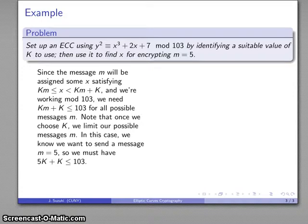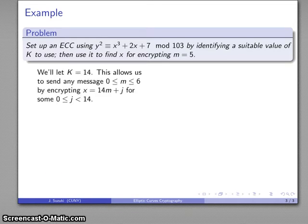Once we choose k, we limit the possible messages m. In this case, I'm sending message m = 5, so I need to ensure 6k ≤ 103. I'll let k = 14, which limits my possibilities for what my message can be.